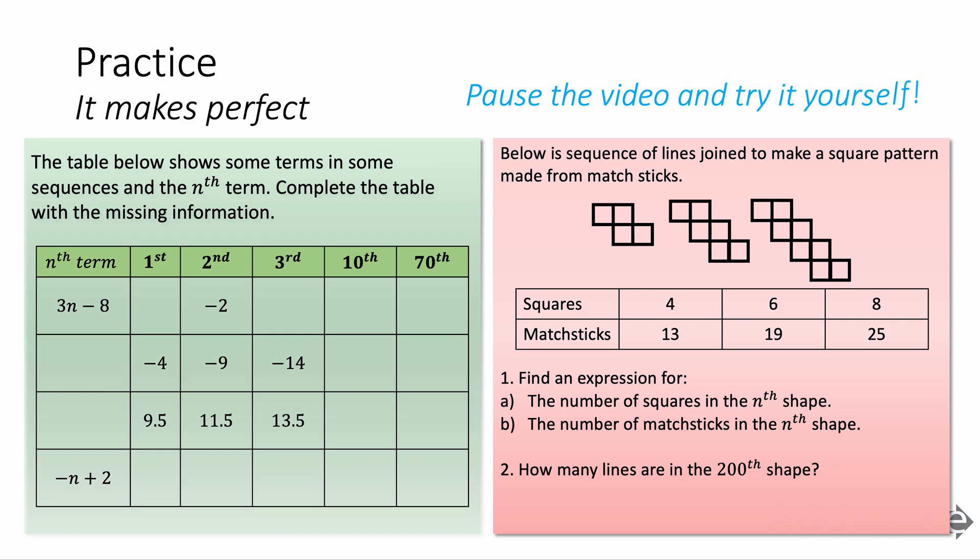I've got some practice questions for you to try here. I'd like to start by doing the green questions where you're filling in that table. Then for the red question, it's a bit trickier. You've got the patterns made from matchsticks. I want you to look at the number of squares created and the number of matchsticks used and create an nth term for the number of squares and nth term for the number of matchsticks. And then for question two, I also want you to find how many lines are in the 200th shape. That means by lines, I mean matchsticks. So you can pause the video there and try this yourself. In a few seconds, I'll reveal the answers in 3, 2, 1.